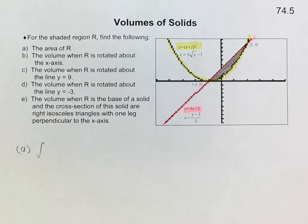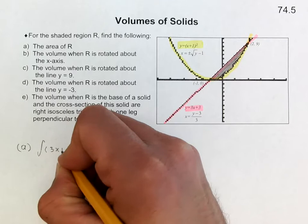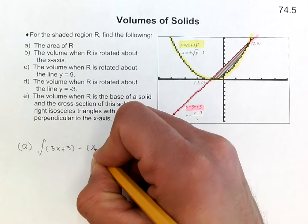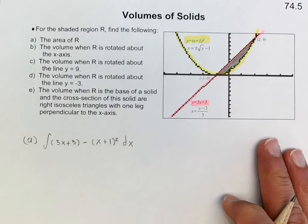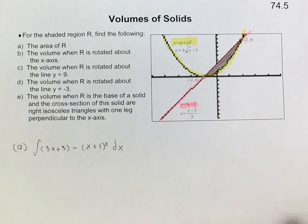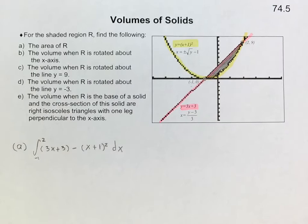So in this case the top line would be 3x plus 3. We have 3x plus 3, and now we're going to subtract the function of the bottom line. The bottom line in this case is the parabola, so we have (x+1)² dx. We're going to integrate that between this intersection point and that one, which is given to us — between negative 1 and 2.